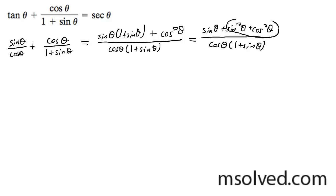As you can see here, sine squared theta, cosine squared theta is equal to one, so I'm going to come down here. I can write down sine theta plus one over cosine theta times one plus sine theta.